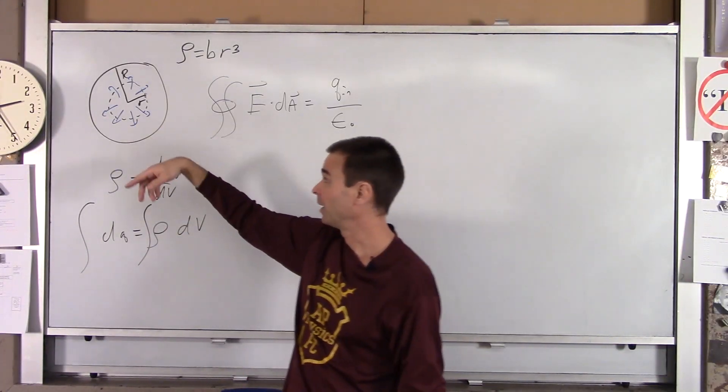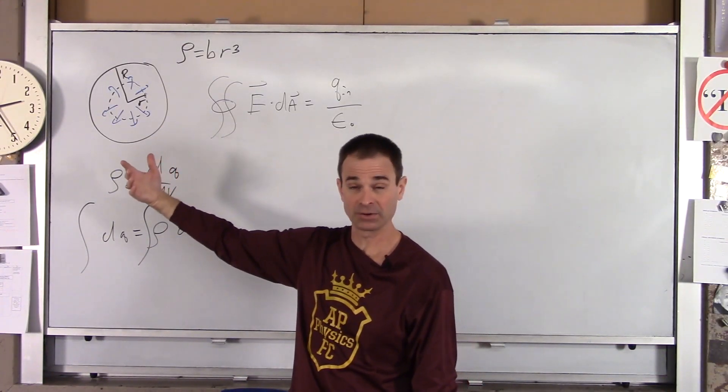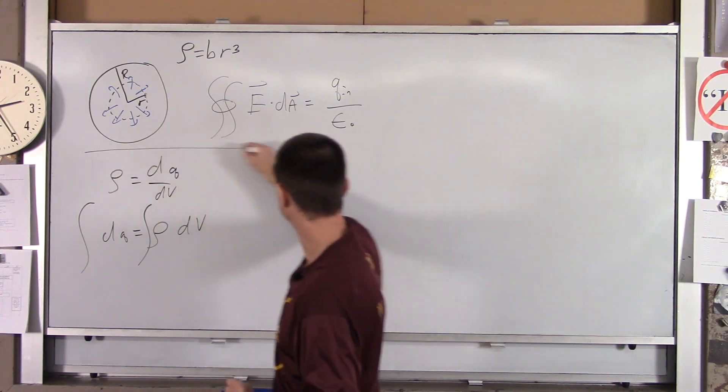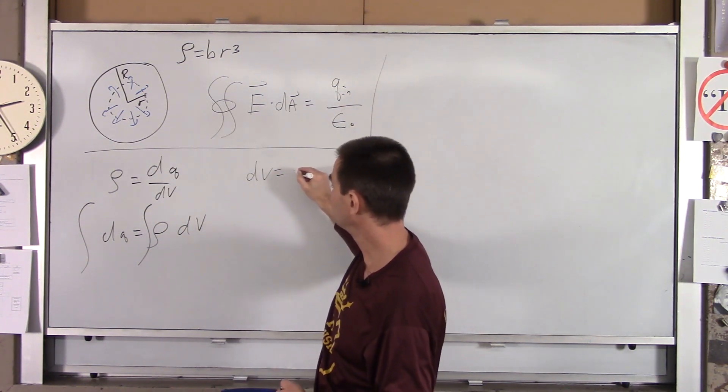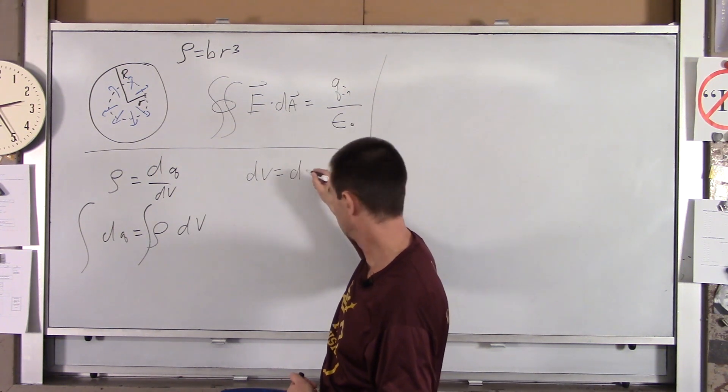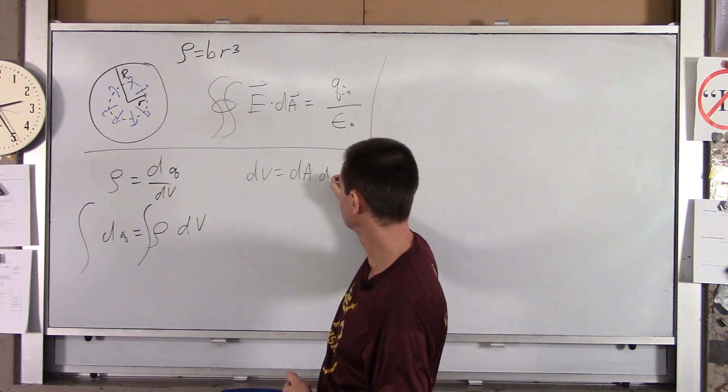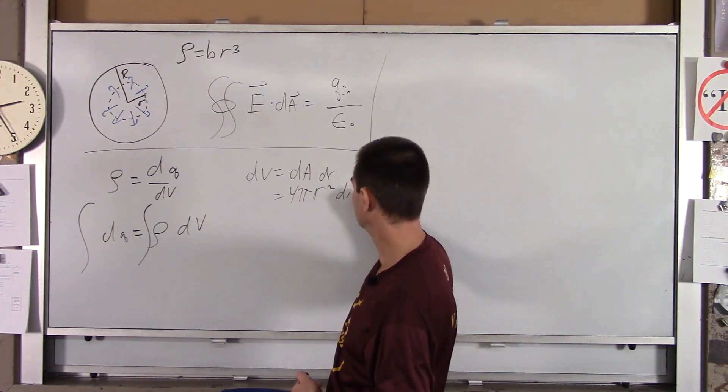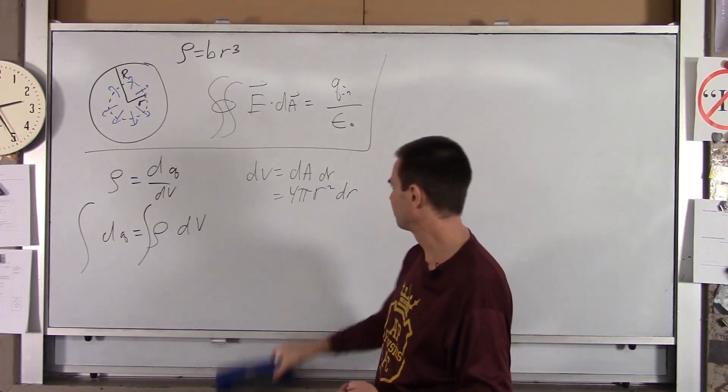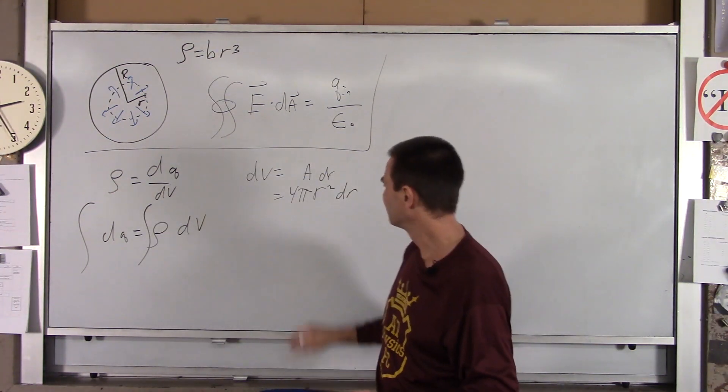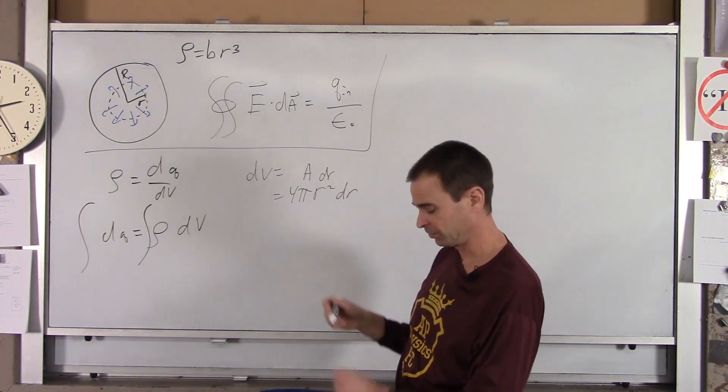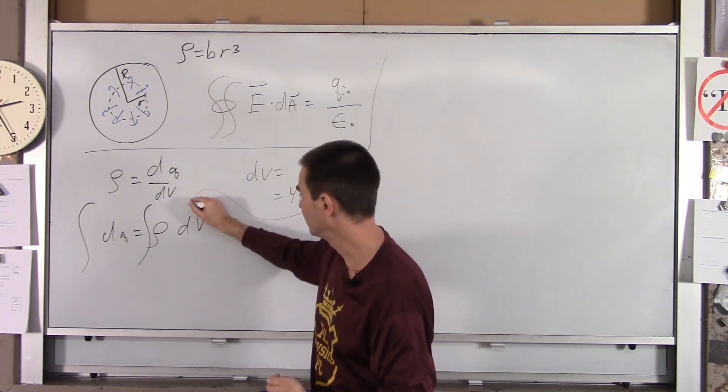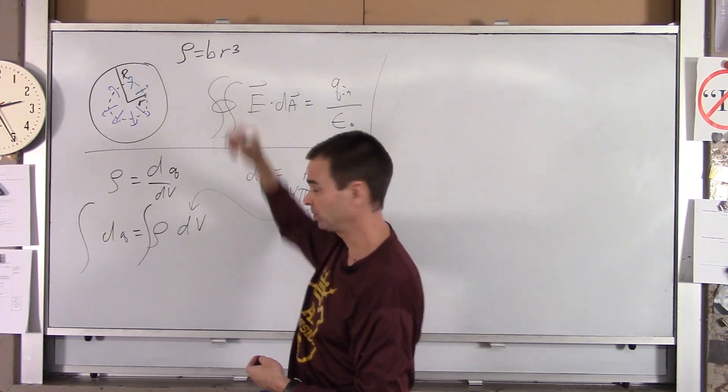The area of this little guy is just the area of the sphere, which is 4 pi r squared. The thickness is dr. So dV, I'll write this kind of off to the side here, dV is area times dr, which is 4 pi r squared dr. So you're taking the area of that shell times its thickness. So we're going to take this and plug it in here. We're going to sub in for rho this.